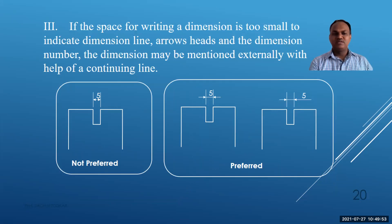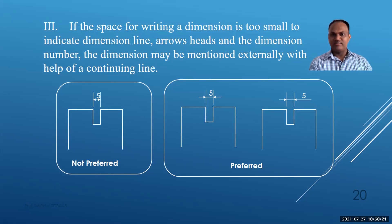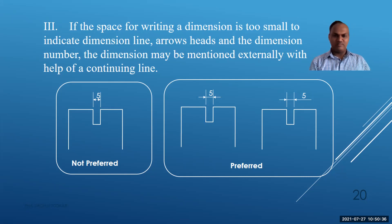Rule 3 — when a slot has very small width and there is insufficient space to write the dimension inside, the preferred method is to place the arrowheads outside and write the dimension inside, or to show both arrows and dimension outside. If the space is too small for dimension line, arrowheads, and dimension number, the dimension may be mentioned externally with a leader line showing the value, such as 5.